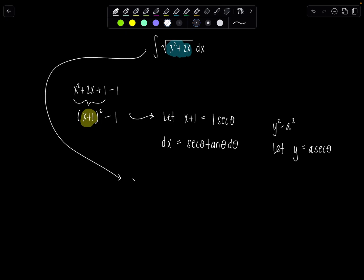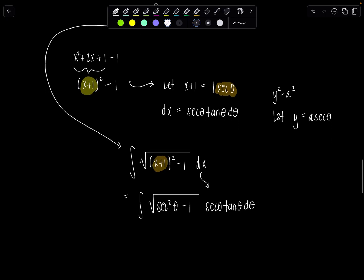Okay. So now we have integral square root. Let me write it with the square completed once. (x+1)² - 1 dx. And then this is going to become integral square root. So that quantity x+1 is secant theta. So this is going to be sec²θ - 1. And then dx is secant theta tan theta dθ. Very good.